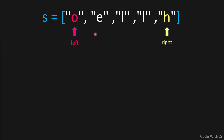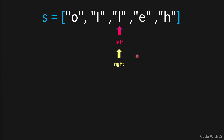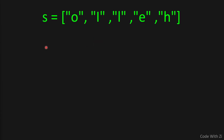As you can see, we swapped 'o' and 'h' — previously we had this and now we have this. After that, we move one step inwards: we increment 'left' and decrement 'right'. Now left points to this letter and right points to this letter, and we swap them again. We then increment left and decrement right — now they point to the same letter, so we swap it with itself. Once left is greater than right, we stop looping and return the result.